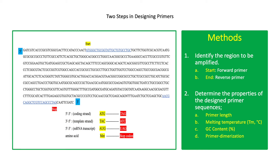There are two steps in designing PCR primers. First, identify the region to be amplified — determine the start and end of the DNA sequence where the forward and reverse primers will be designed respectively. Second, check the properties of the designed primer sequences, which includes the primer length, melting temperature, GC content, and primer dimerization.